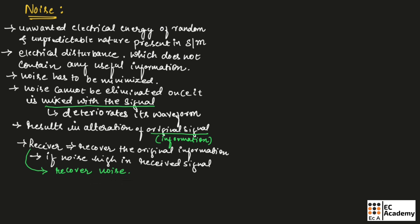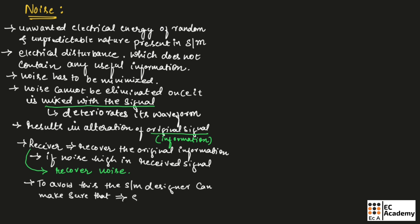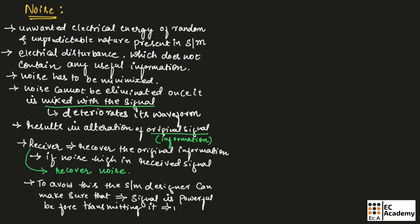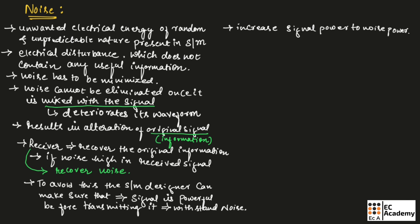To avoid this, the system designer can make sure that the signal is adequately powerful before transmitting it. This enables the signal to withstand the noise. To achieve this, the designer has to increase the signal power to noise power ratio, which is SNR — signal to noise ratio.